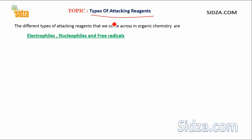In most of the organic reactions, the different types of attacking reagents that we come across are broadly categorized into three main groups: electrophile, nucleophile, and free radicals.